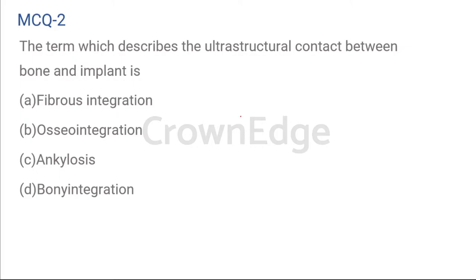Another MCQ: the term which describes the ultrastructural contact between bone and an implant — the word you're looking for is ultrastructural. The answer is osseointegration. We discussed osseointegration in the last class and again today. Ankylosis is a bony adaptation to the bone. If you see the word fibrous attachment, then it becomes fibrous integration. They play with the words quite a lot, so do not confuse yourself with regards to these terms.